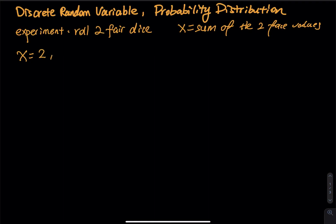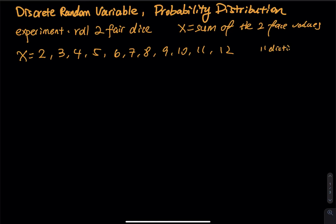And then we can get 3, 4, 5, all the way up to 12. So X is a discrete random variable. I use the word discrete because I can use my fingers to count that this experiment has 11 distinct outcomes. Distinct means different.